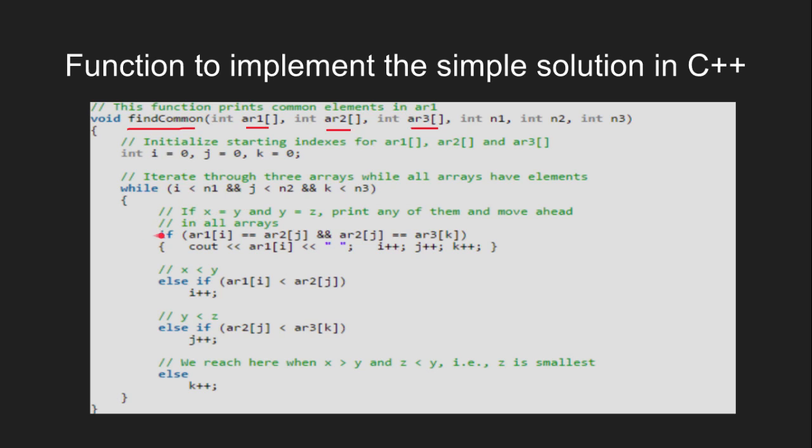Simply, case 1, when all the 3 elements are equal, we print them and we move ahead in all the 3 arrays. When x is less than y, we move ahead in array 1. When y is less than z, we move ahead in array 2. And when x is greater than y and z is less than y, we move ahead in array 3. That means z is the smallest in this case.